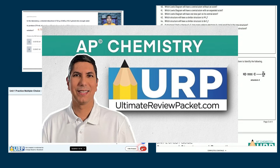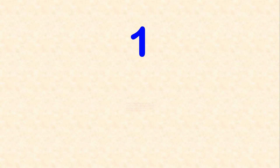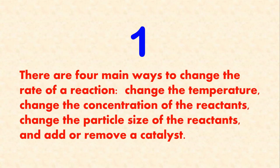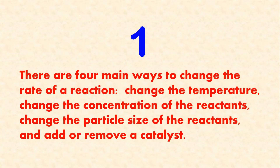Now, here are the 10 things you've got to know from Unit 5. Number one: there are four main ways to change the rate of a reaction — change the temperature, change the concentration of the reactants, change the particle size of the reactants, and add or remove a catalyst.